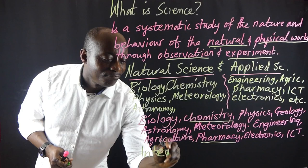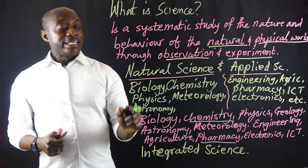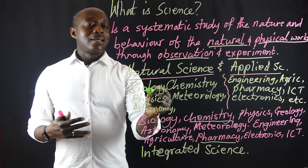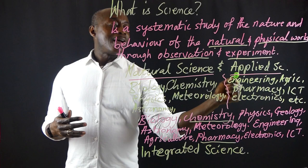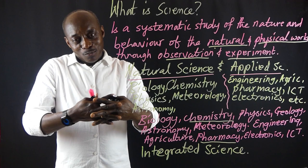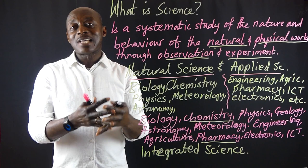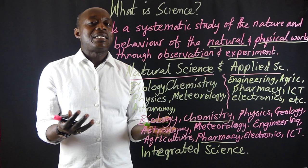It is integrated science in the sense that there is a bit of biology, chemistry, physics, electronics, and so on — all integrated, put together — that you are studying in a holistic manner at the same time. That is why it is known as integrated science. When we say integrated science, it simply means learning the various aspects of science all together in a holistic manner.